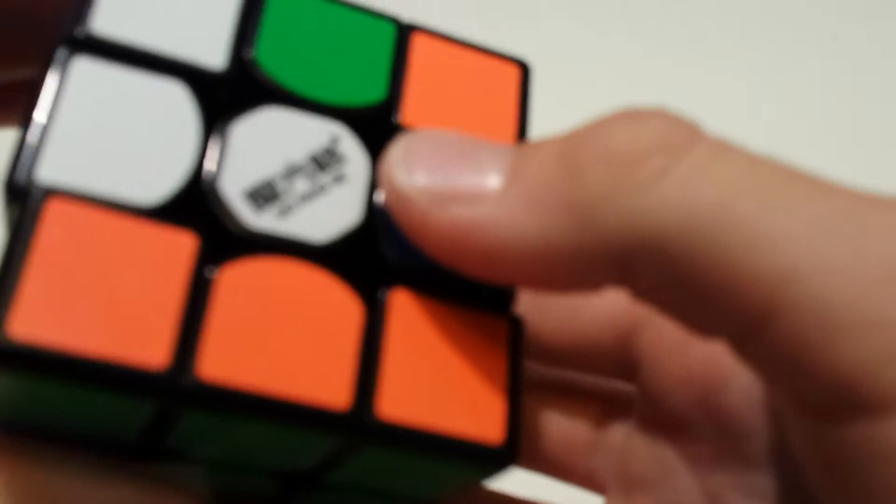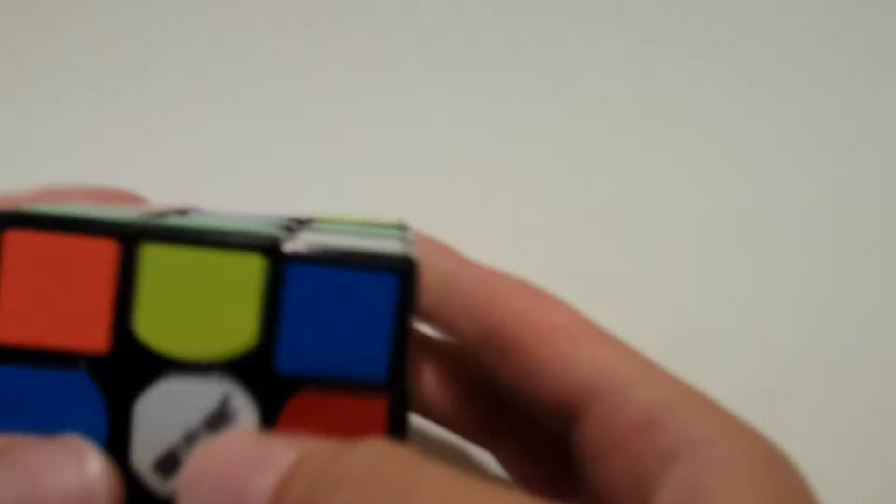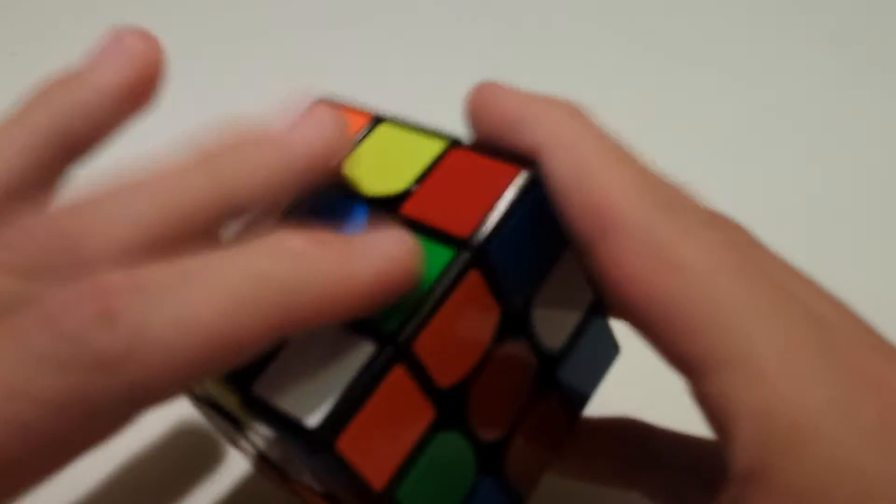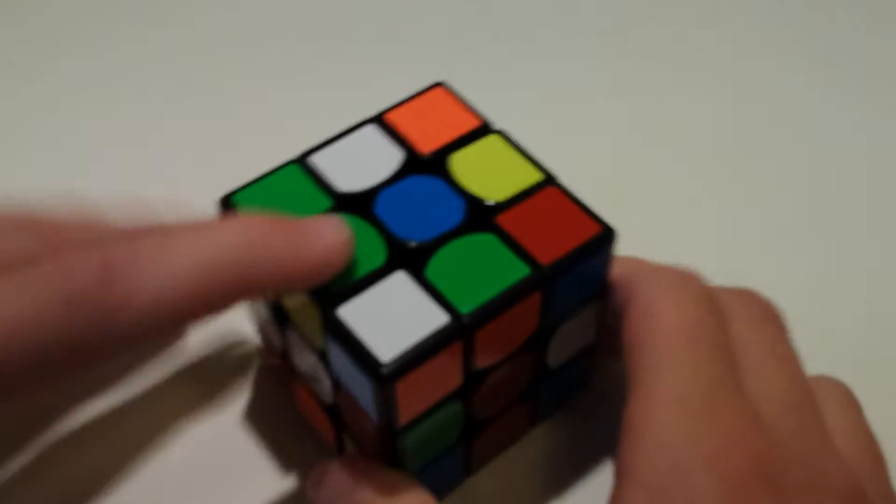So this method is sort of like Ortega for 3x3. Sort of. Well, you can just do like this too. You do permute both layers at once. So this one and this one. But this is very simple too.